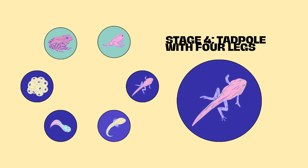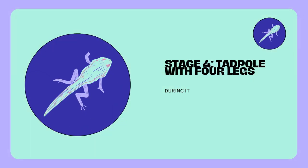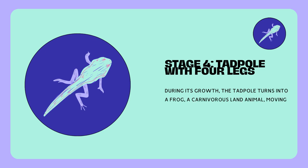Stage 4: Tadpole with four legs. During its growth, the tadpole turns into a frog — a carnivorous land animal, moving with four legs and breathing with lungs.